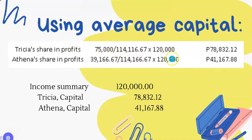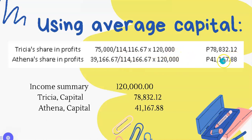To get Terra's share, divide 75,000 by 114,166.67 then multiply by 120,000 — you get 78,832.12. For Athena, her average capital over the total capital of 114,166.67, multiplied by the 120,000 net income, gives 41,167.88 as her share in profits. The income summary entry will be: debit Income Summary 120,000; credit Terra Capital 78,832.12; and credit Athena Capital 41,167.88.